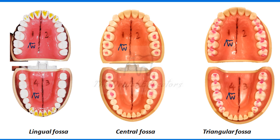A fossa is an irregular depression seen on the posterior and anterior teeth. There are different kinds of fossa including the lingual fossa, central fossa, and triangular fossa, which will be discussed in the coming slides.